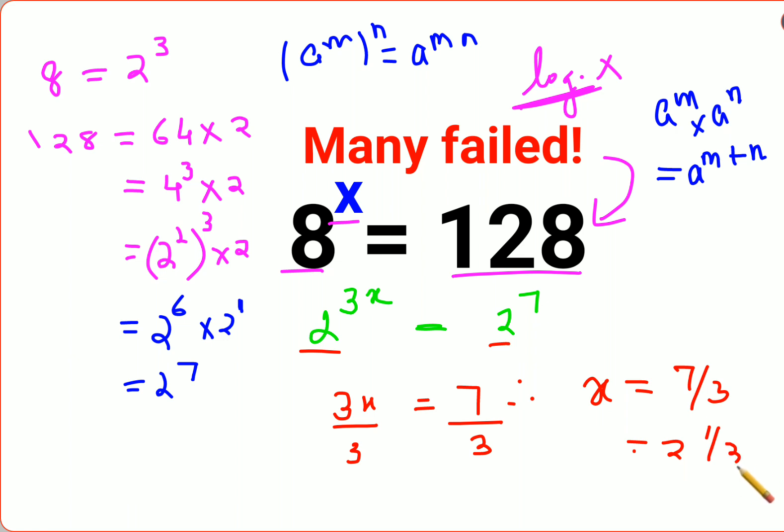Now let's put this value over here. We have 8 raised to x equals to, we need to check if it is becoming equal to 128 for x equals 7 upon 3. So we'll have 8 raised to 7 upon 3. 8 is nothing but 2 cube, the whole raised to 7 upon 3.